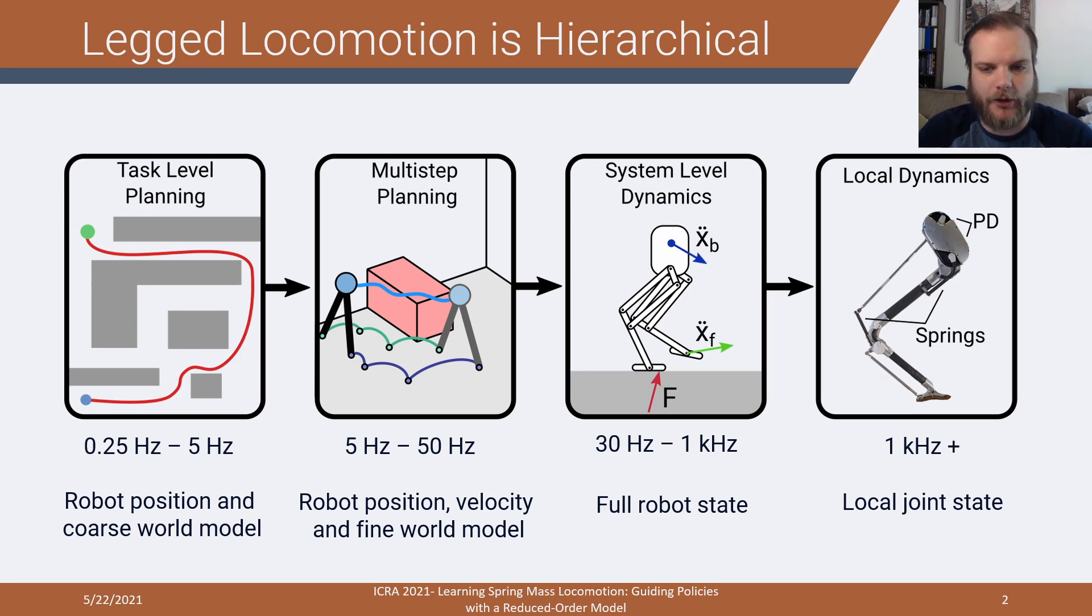As you move higher in the hierarchy, you now have access to the full robot state, and you're controlling in the context of system-level dynamics. So this slows down generally, and you also have the full state information. This would be inverse dynamics, hybrid zero dynamics, and learned control methods.